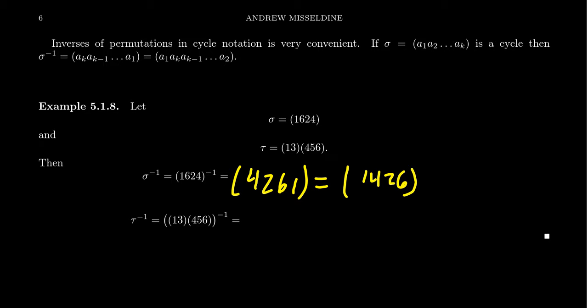So τ⁻¹, which is a 2-cycle times a 3-cycle, the shoe-sock principle says that this is going to be the inverse of (4, 5, 6) times the inverse of (1, 3).